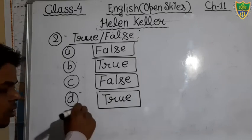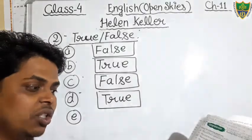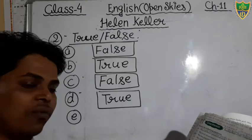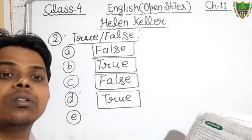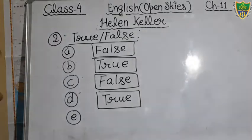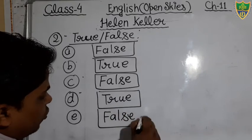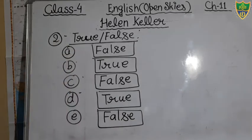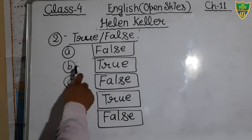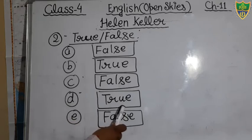Question E: 'When she was about 16 years old, Helen knew how to speak 4 languages.' No, she knew how to speak 5 languages, not 4. So that is a wrong sentence and we will fill the word false. So the answers are: A — false, B — true, C — false, D — true, E — false. Fill these in the given boxes in your book.